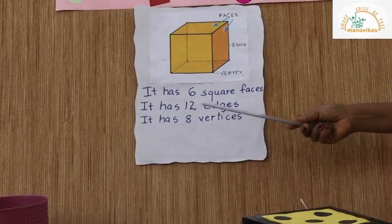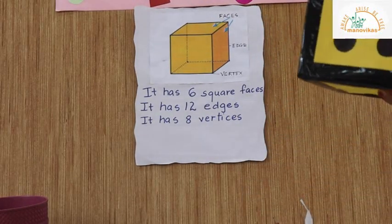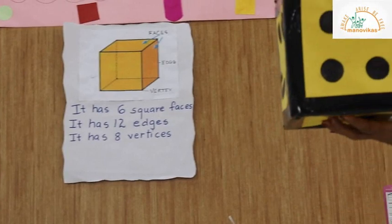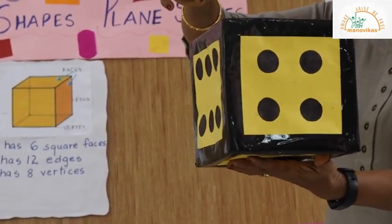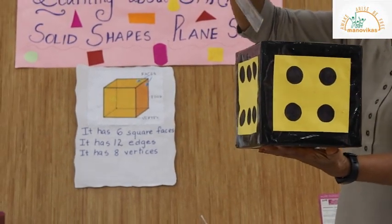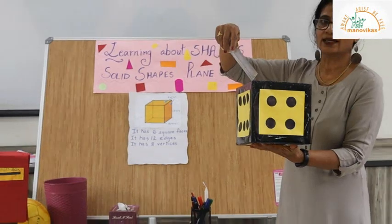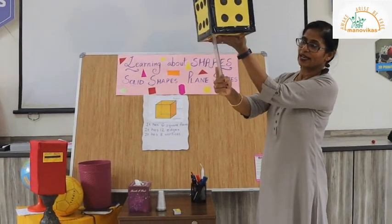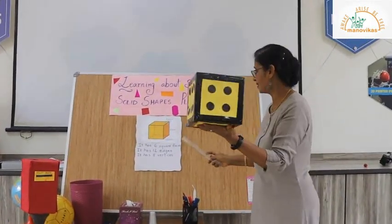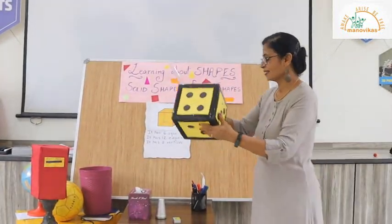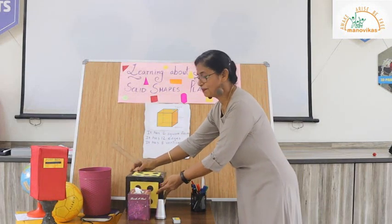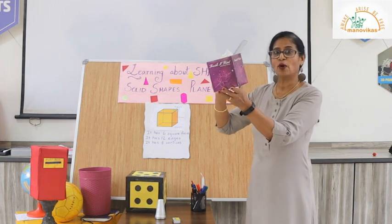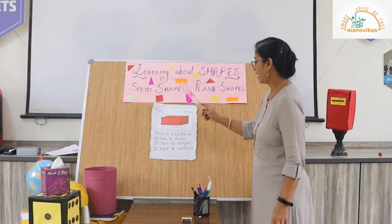A cube has eight vertices. A vertex is the point where three edges meet. So counting: one, two, three, four, five, six, seven, eight — a cube has eight vertices. This dice is an example of a cube. We also have a tissue box which is in the shape of a cube.